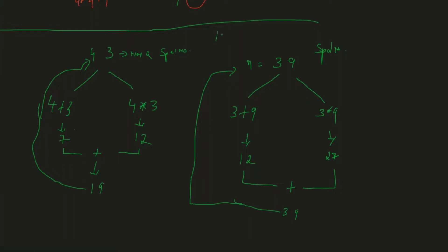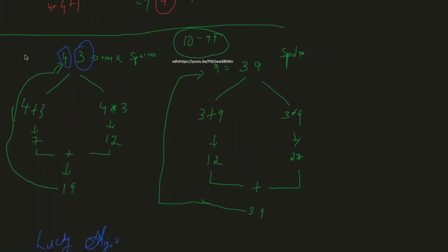So from the range 10 to 99 — within two-digit numbers — you need to tell me which are the special numbers. If I enter any number, you need to identify whether it is a special number.